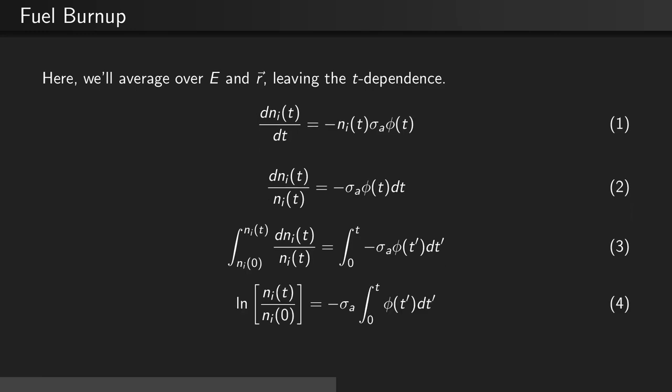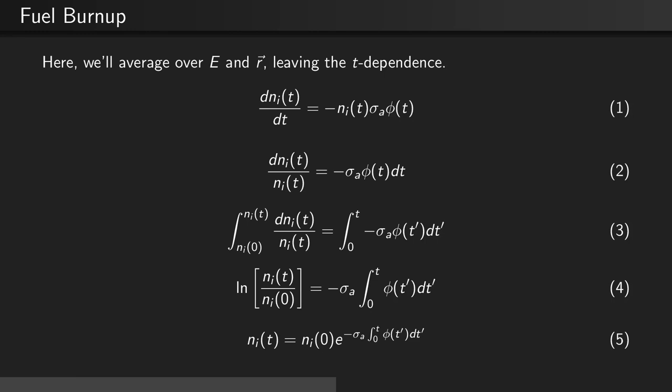Doing so will yield the natural log of Ni divided by the initial concentration Ni on the left-hand side equal to minus the microscopic absorption cross-section times the integral from zero to t of the flux. Exponentiating both sides, we see that the concentration of the i-th nuclide at some time t in the future is equal to its initial concentration times e to the negative sigma A times the integral from zero to t of the flux dt prime.